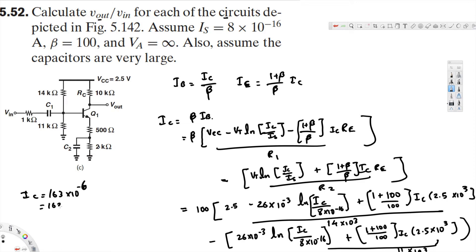And that is 163 microampere. Now we have to find out the transconductance, that is g_m is equal to I_C over V_T. I_C is 163 times 10 to the power of minus 6 and V_T is 26 times 10 to the power of minus 3, and that gives us 6.27 millisiemens.